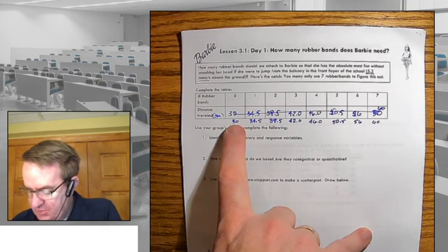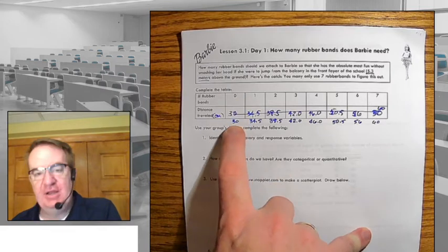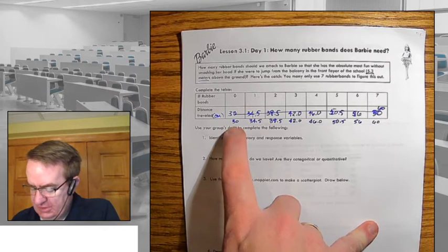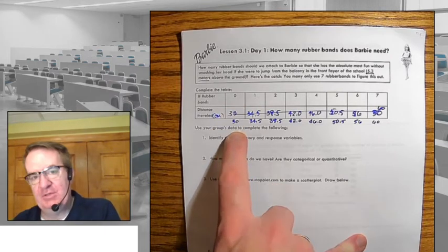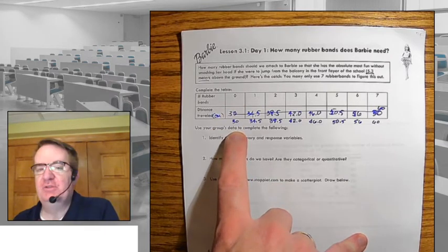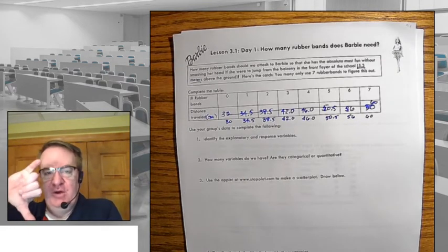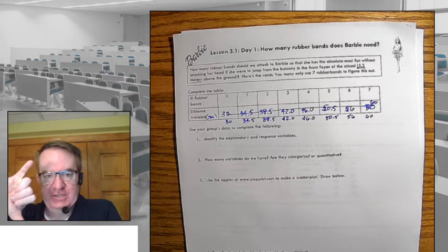So from there, what we're going to end up doing is this. So I grabbed some data here. I apologize for the scratch-out. I had to adjust things a little bit. So with zero rubber bands, the Barbie doll, which is just about a foot tall, actually I think most of them are about 11 and a half inches, falls down about 30 centimeters.